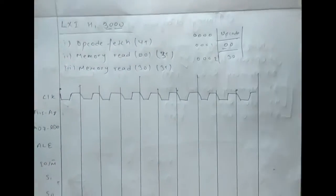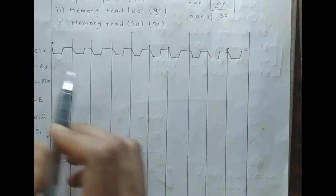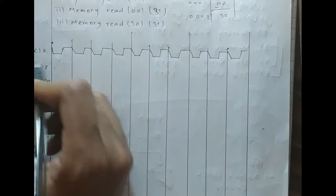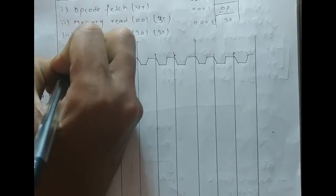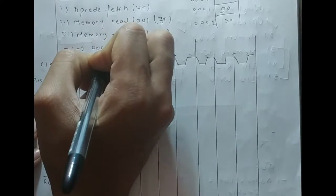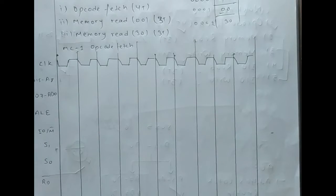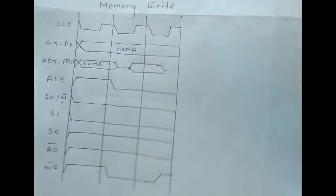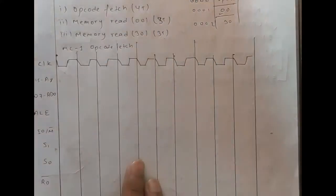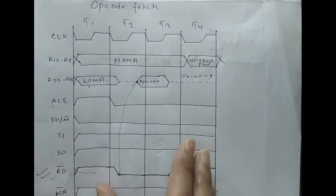Now I have made this timing diagram and already drawn the clock. The first part is machine cycle 1, opcode fetch. We are already familiar with drawing the timing diagram for opcode fetch — we performed that in our previous video. This is the timing diagram for the memory read, and this is the timing diagram for opcode fetch — we will draw the same in this part.